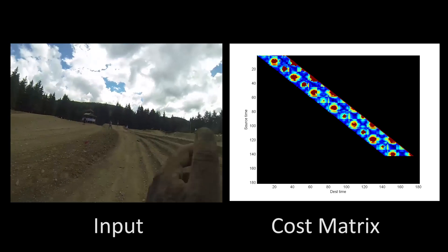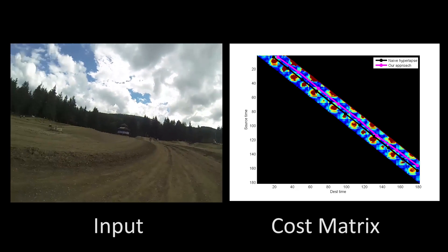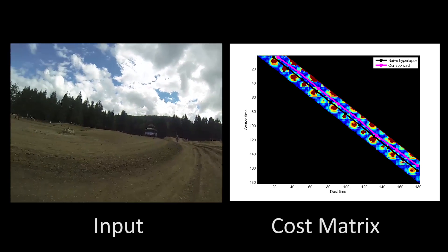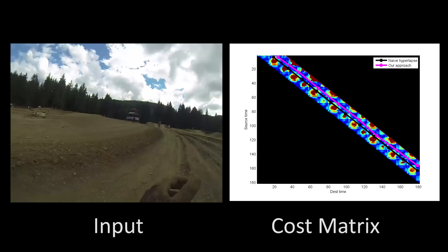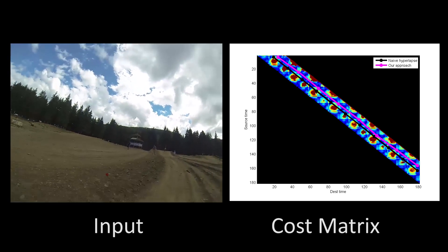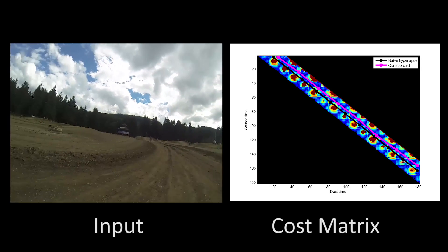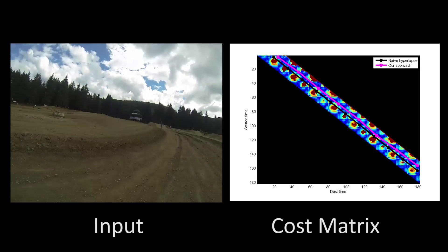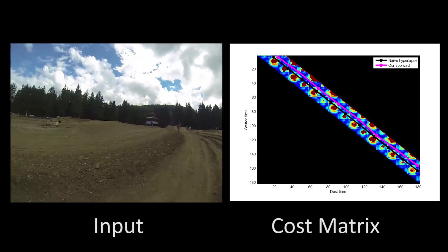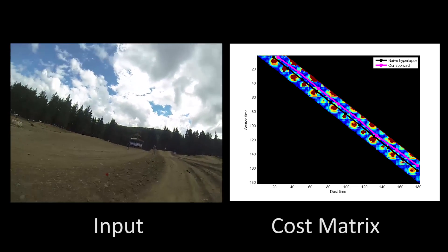A naive time lapse would consist of simply selecting every nth frame. Here we choose every 16th frame for a 16x speedup, shown as the black line. We developed a dynamic programming algorithm to select the frames that approximate a 16x speedup, but minimize a total cost equaling the sum of the transition cost plus a cost for violating the target 16x speedup.